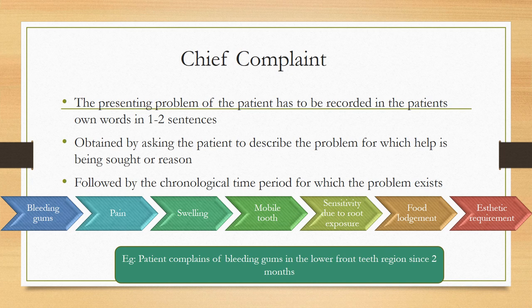The chief complaint is the presenting problem recorded in the patient's own words in one to two sentences, obtained by asking the patient to describe the problem for which help is sought, followed by the chronological time period for which the problem exists. For example, if the patient has bleeding gums, write: 'Patient complains of bleeding gums in the lower region' followed by the duration.